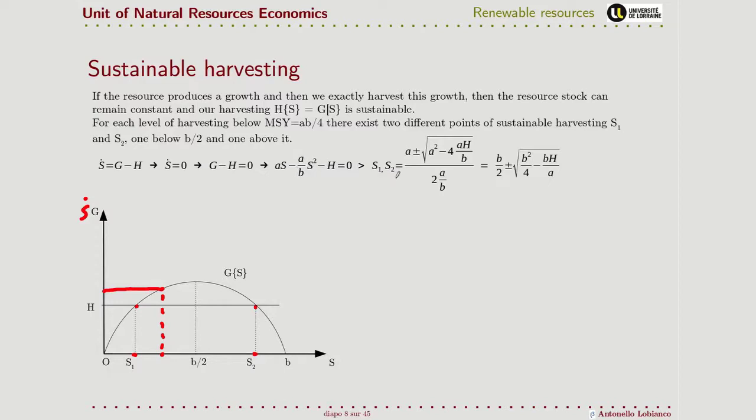We end up with an equation of a second order where the two roots are S1 and S2 equal to B over 2, that is the center, plus or minus this value. So one of these equilibrium points will be on the right, and one will be on the left.